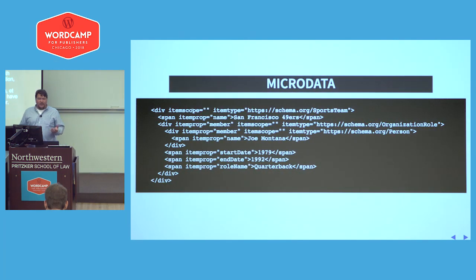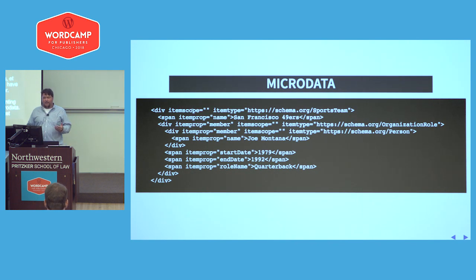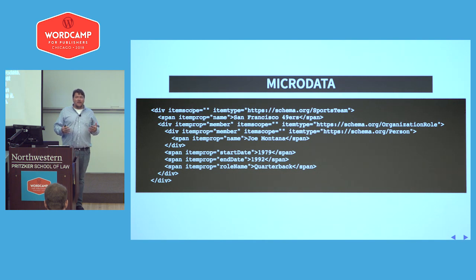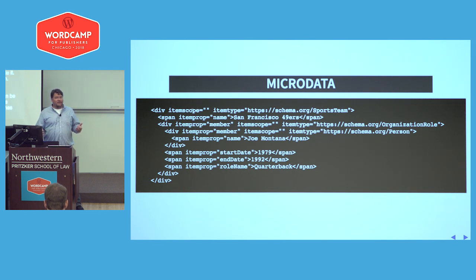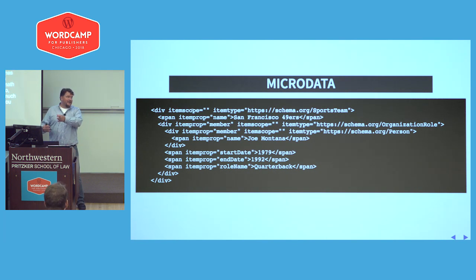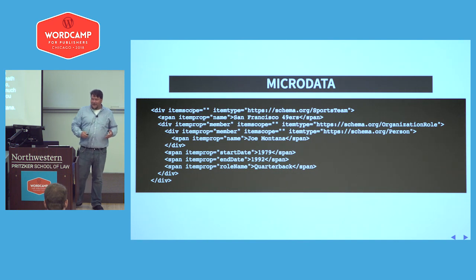We started implementing schema.org using microdata — basically inline markup where you specify the type and then have elements inside of it. Here's a sports team: it has a name, and the wonderful thing about schemas is that they can be nested together. The sports team has a name but also has members. Joe Montana played for the 49ers, so he is a member inside of this sports team, and you can nest information all the way down.